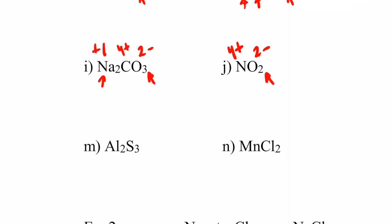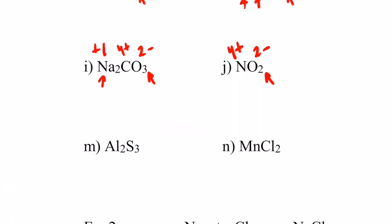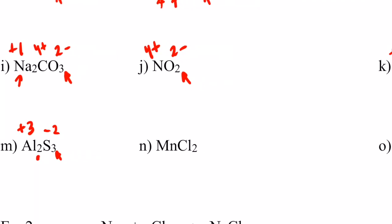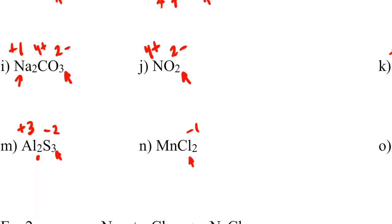For letter m, Al2S3: sulfur is now the most electronegative element, and its charge is negative two to achieve a noble gas configuration. Three sulfurs give six negatives; two aluminums must give six positives, so each aluminum is positive three — which we know aluminum always is when it forms a bond. For letter n, MnCl2: chlorine is the most electronegative at negative one. Two chlorines give two negatives, so manganese must be positive two.